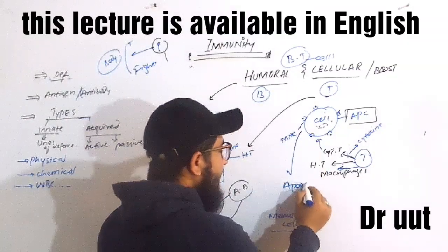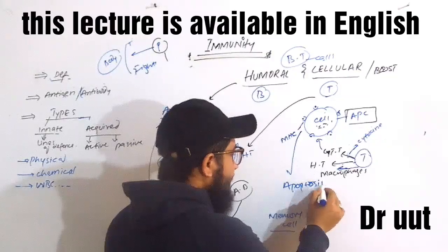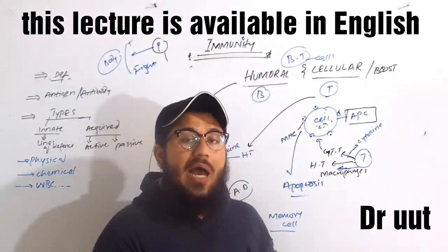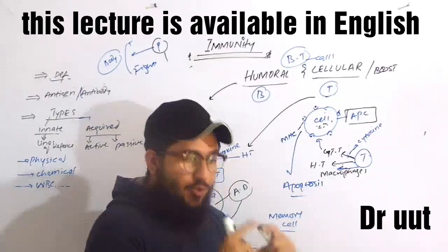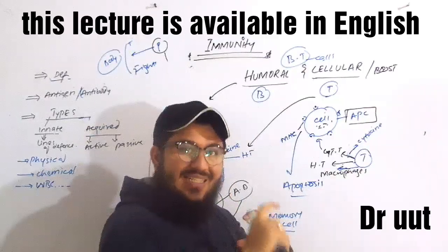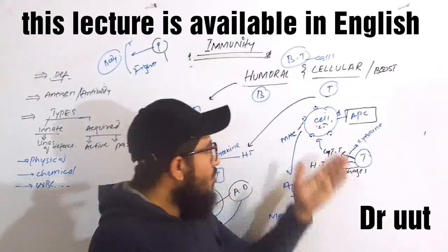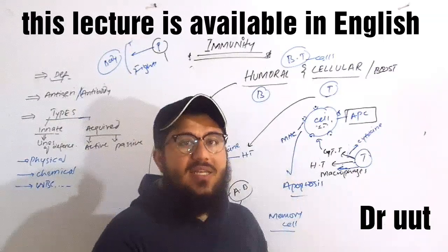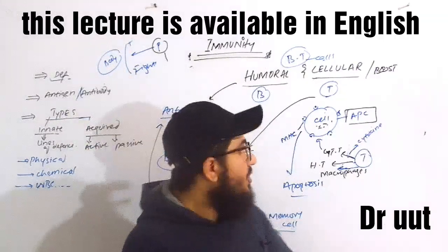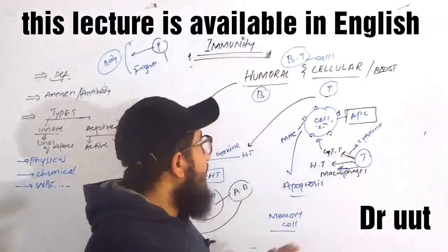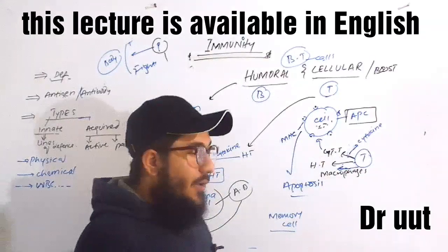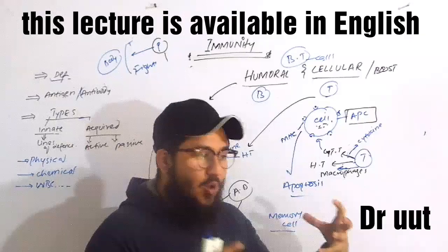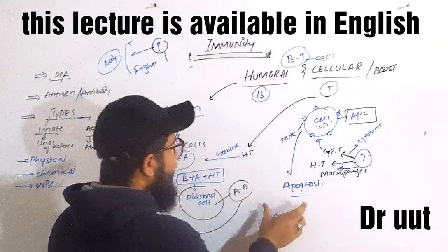The cytotoxic T cells then induce apoptosis — programmed cell death — in the infected or foreign cell. This is how cellular immunity eliminates threats at the cellular level through apoptosis.